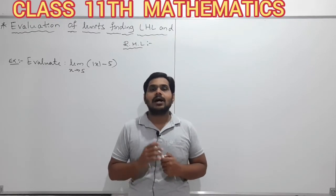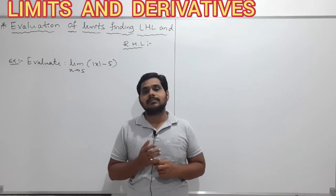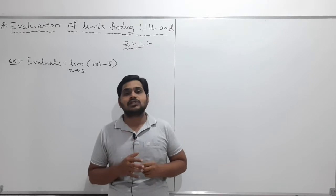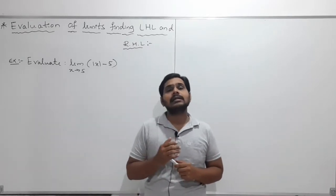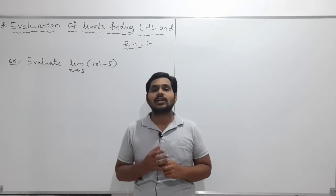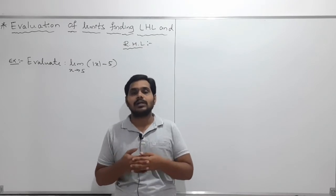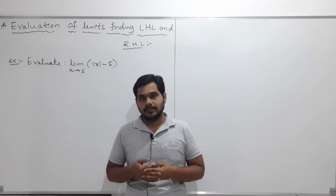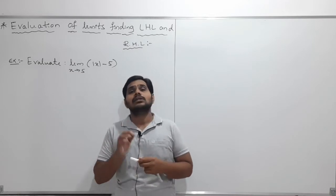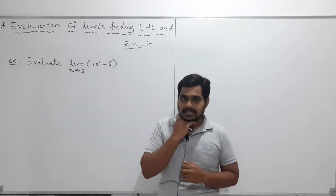In the previous videos, we discussed how to evaluate limits using some standard results. For example, the limit of sin x over x as x tends to 0 equals 1, and the limit of tan θ over θ as θ tends to 0. We also discussed the limit of (xⁿ - aⁿ)/(x - a) as x tends to a, which equals n times a to the power n minus 1. The first method we discussed was the direct substitution method.